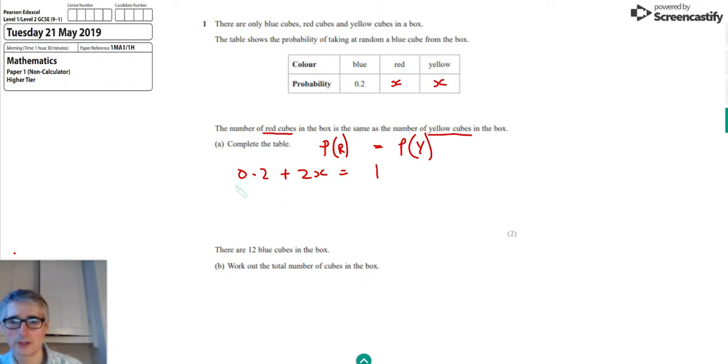So we can say, take away 0.2 from both sides. And we get that 2X equals 0.8. And then if we divide through by 2, we end up with X equals 0.4. That's dividing both sides of it by 4.